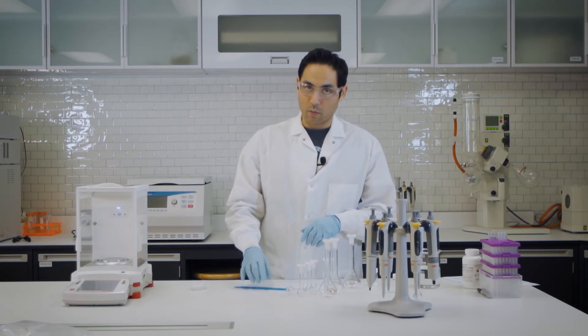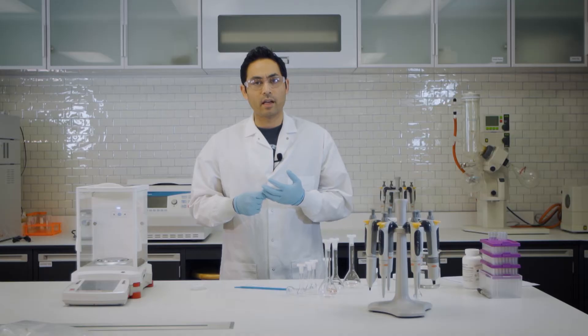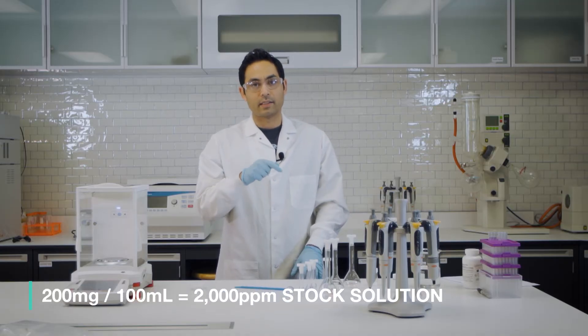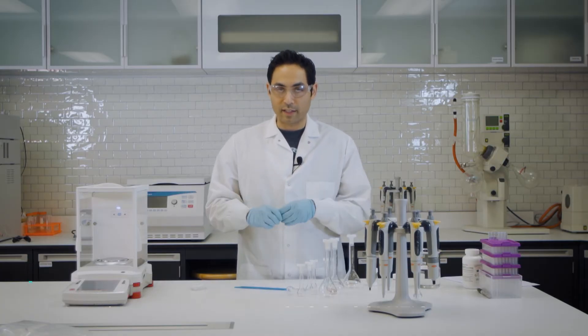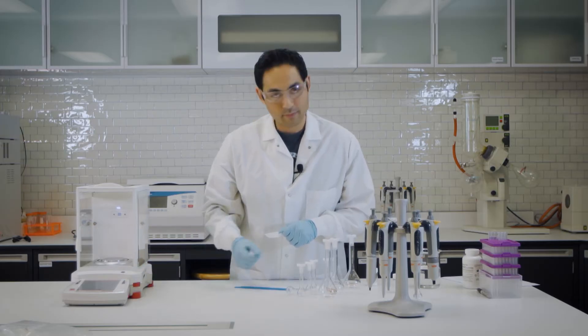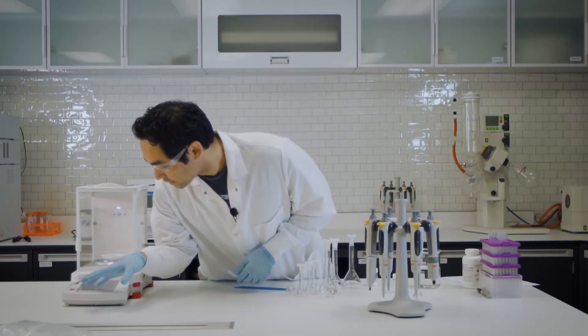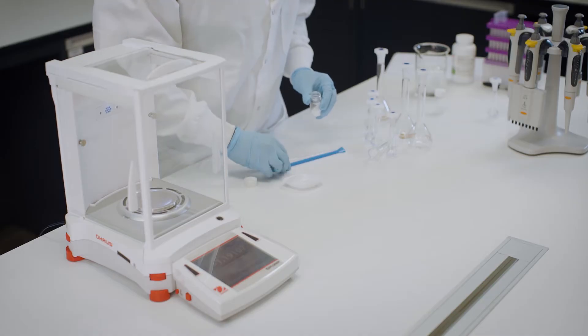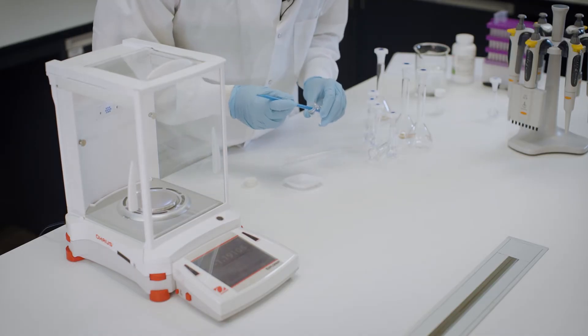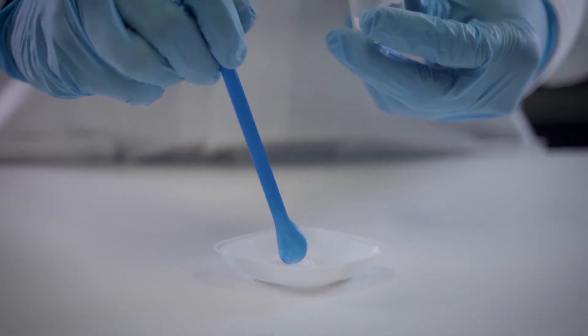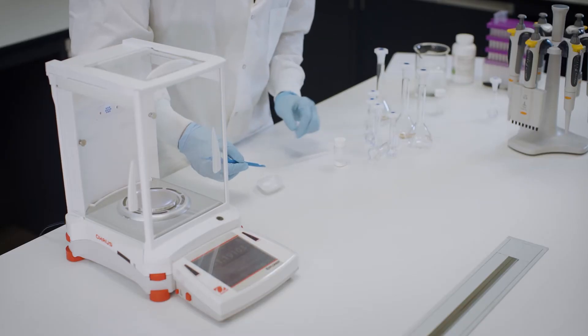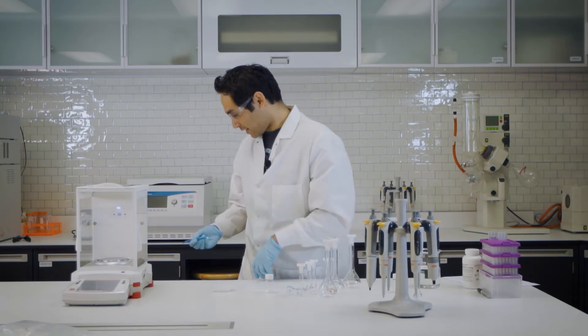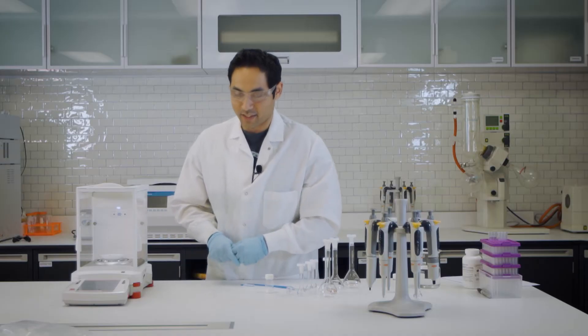So the first thing we're going to do is we're going to weigh out roughly 200 mg of NEAT. If we go 200 mg into 100 ml, that'd give us your 2000 ppm stock solution. First, tare the weigh boat. So we're going to weigh out about 200 mg of this. And we need a little bit too much, so we'll take some out. So that should be good. That's about 200 mg.